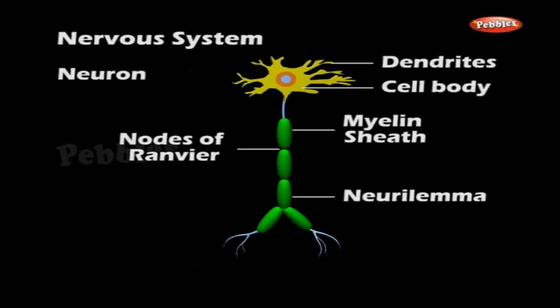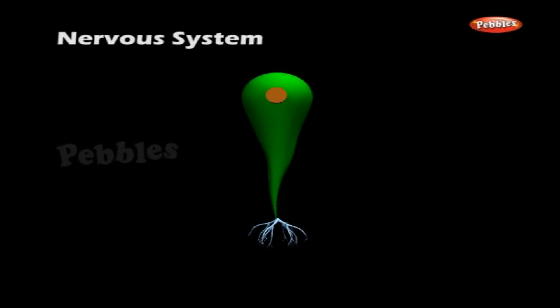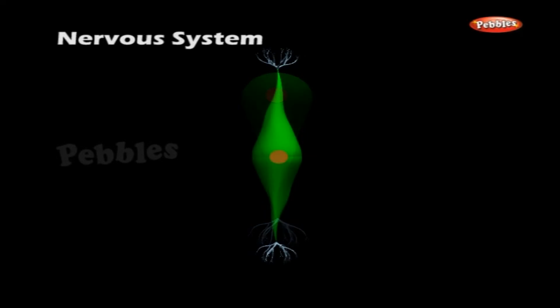Depending upon the number of nerve fibers, neurons are classified into: 1. Unipolar, 2. Bipolar, and 3. Multipolar neurons.